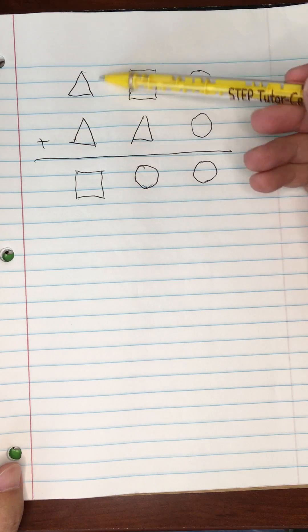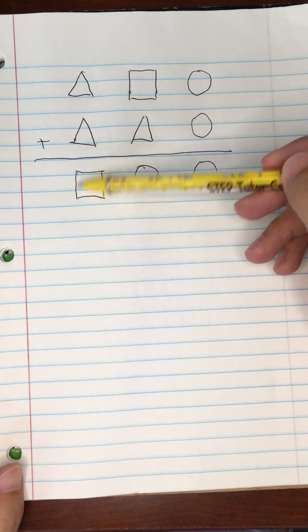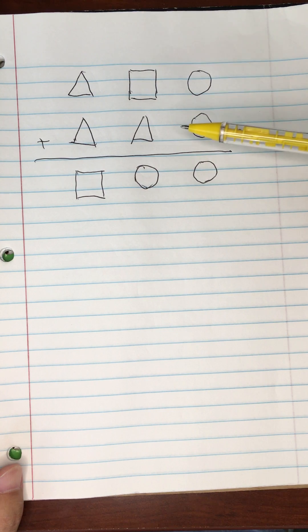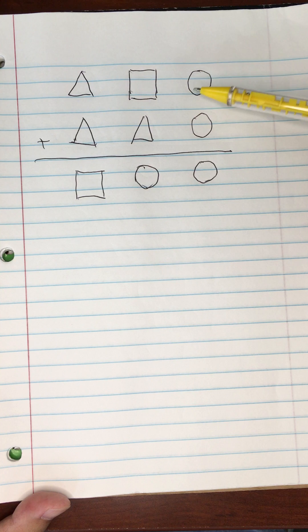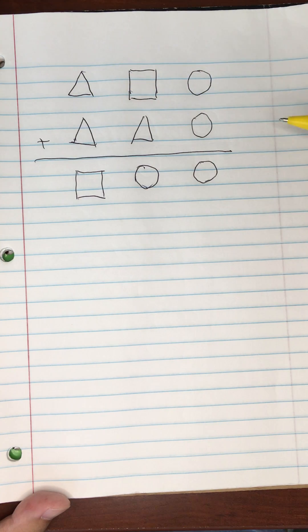If we carry out the summation, the end result should be square, circle, and circle. The question is, how do we find out what digits these three shapes actually represent?